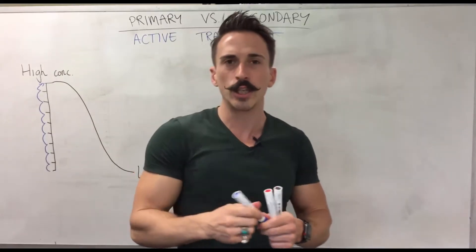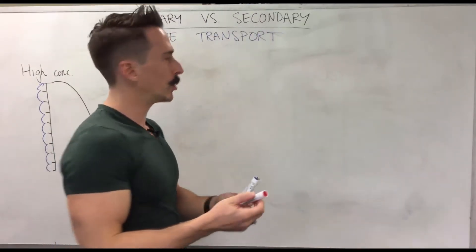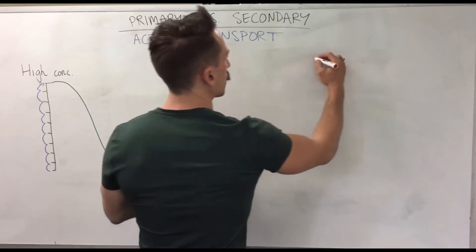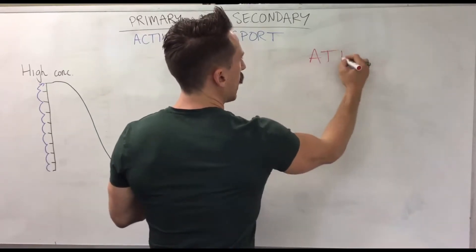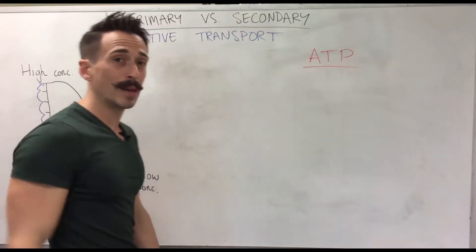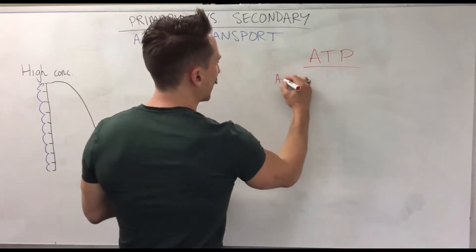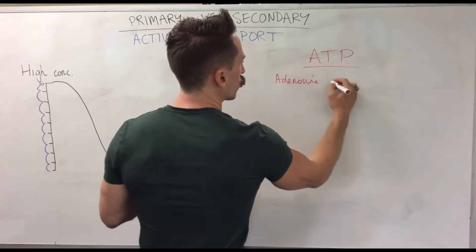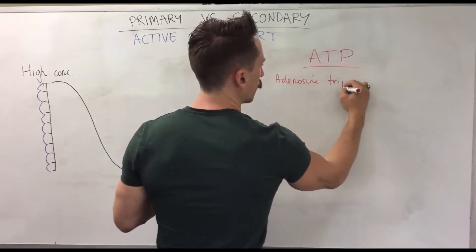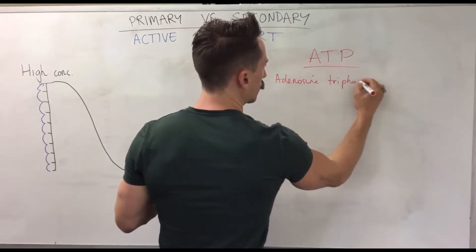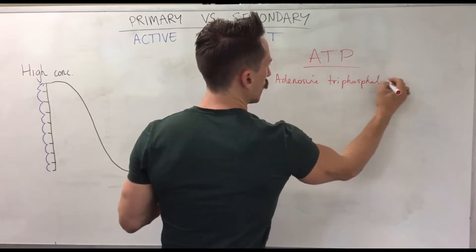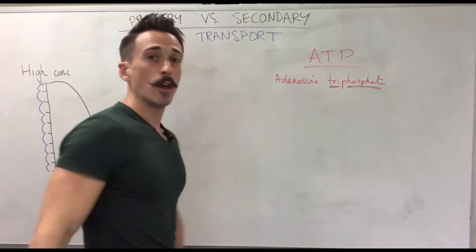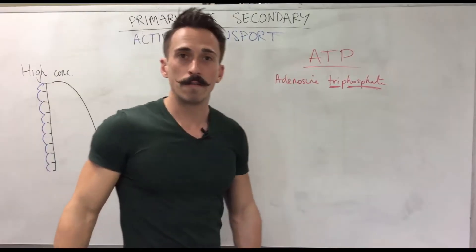What is the energy substrate we use in the human body? The most important one you need to know is ATP — adenosine triphosphate. Tri meaning three, saying that there are three phosphates in ATP.